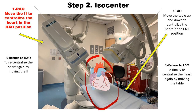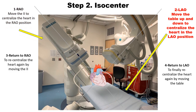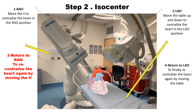The way we do it is we start in the RAO position. We move this image intensifier until we get the heart centralized in the RAO position. We then want to centralize the heart in the LAO position, and the way we do that is by moving the table up and down — not by moving the image intensifier at all. This is followed by returning to the RAO position to re-centralize the heart again by moving this image intensifier.